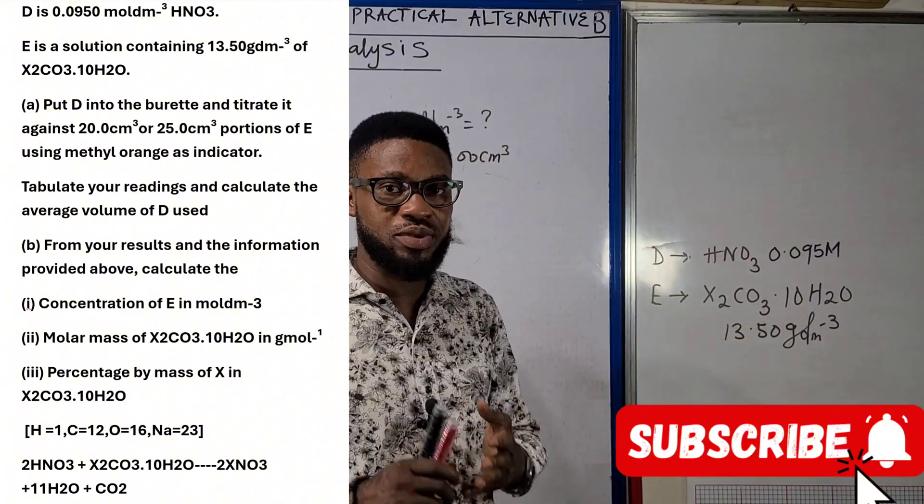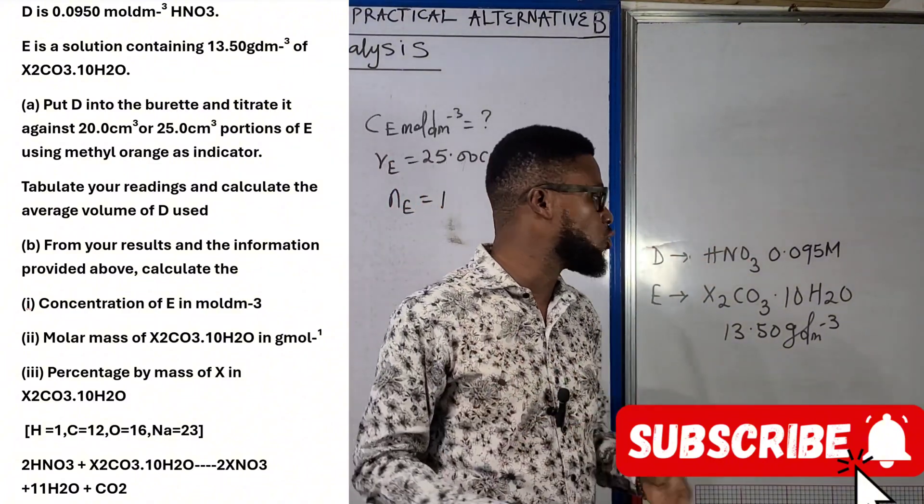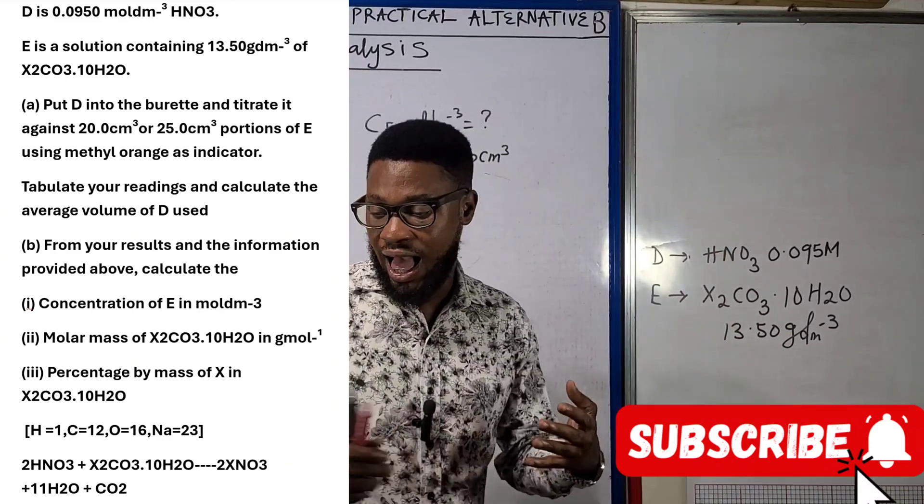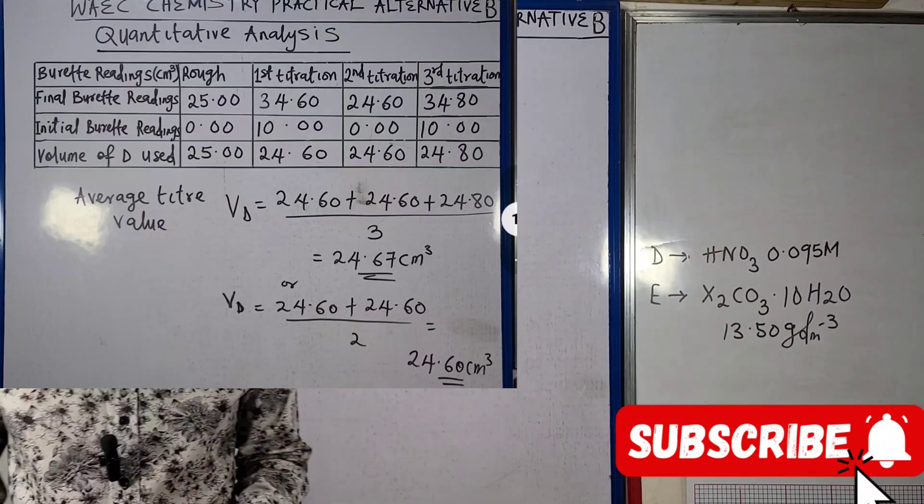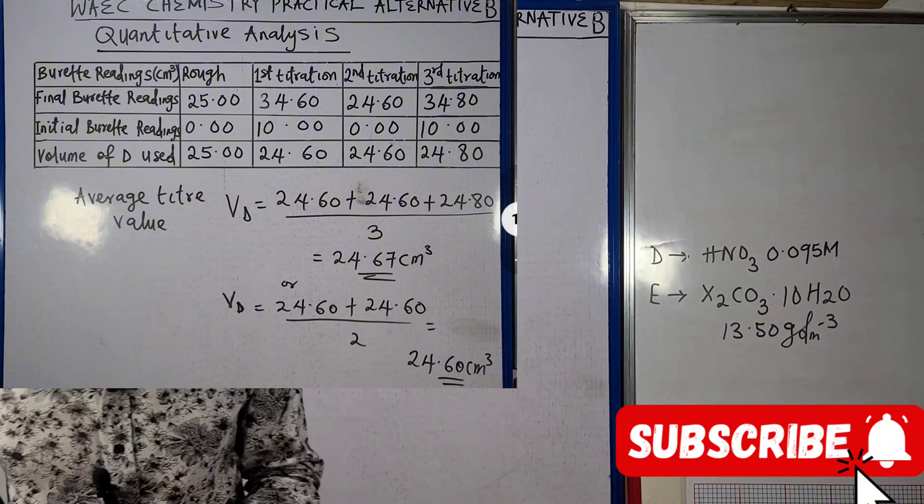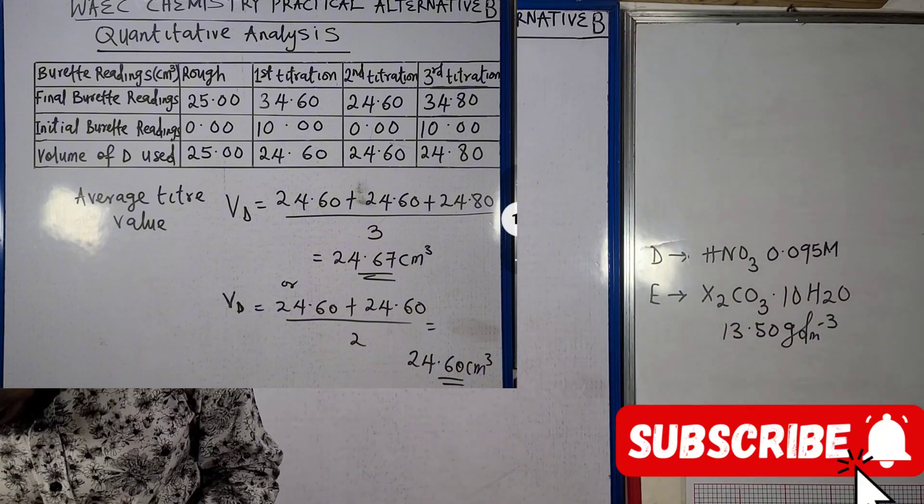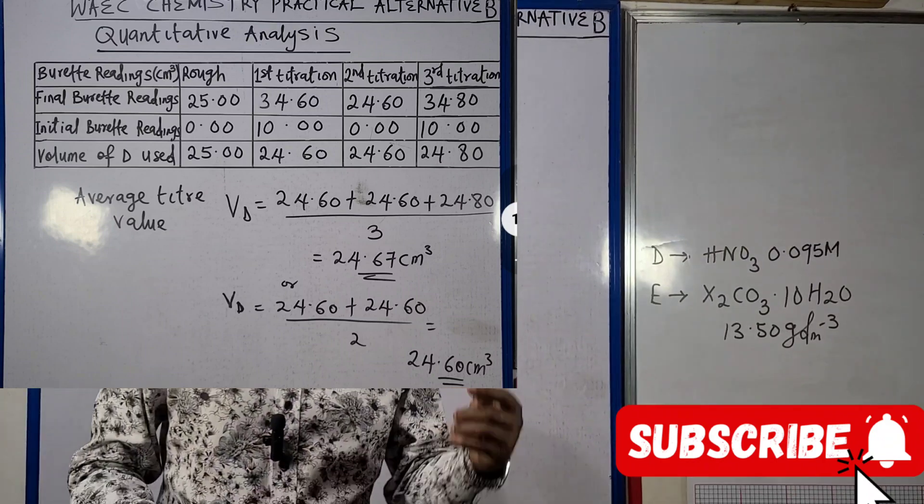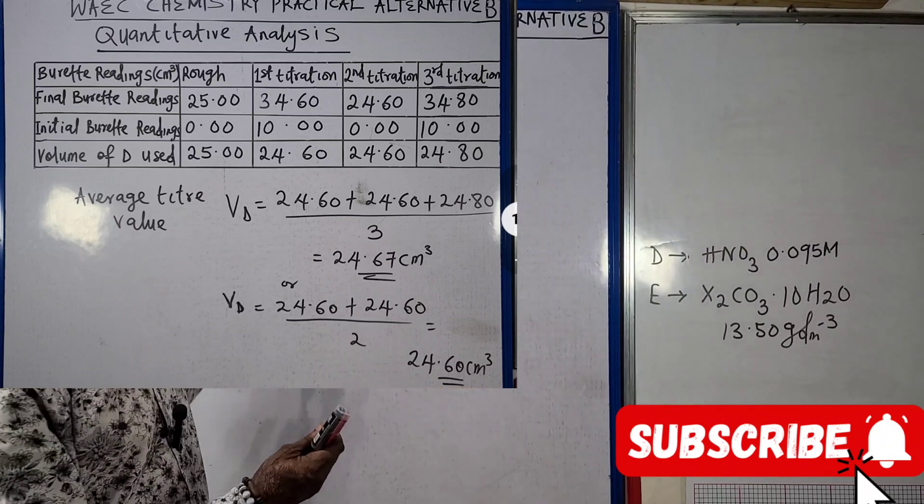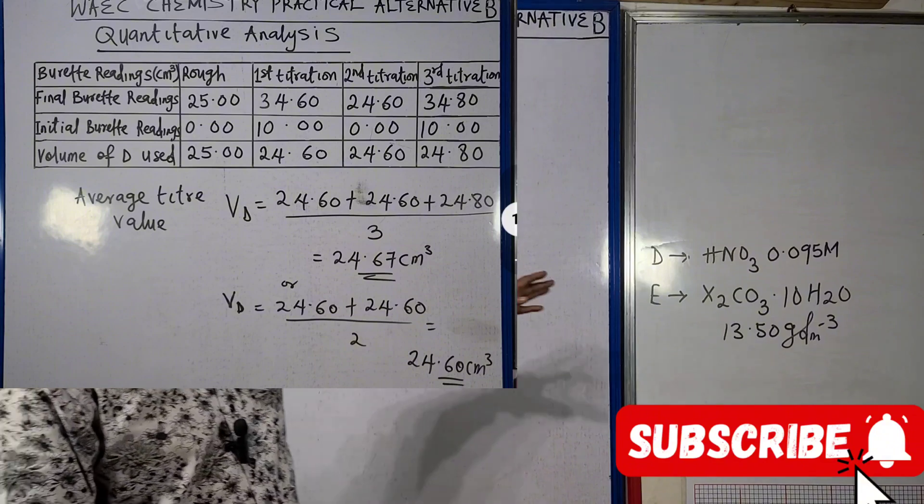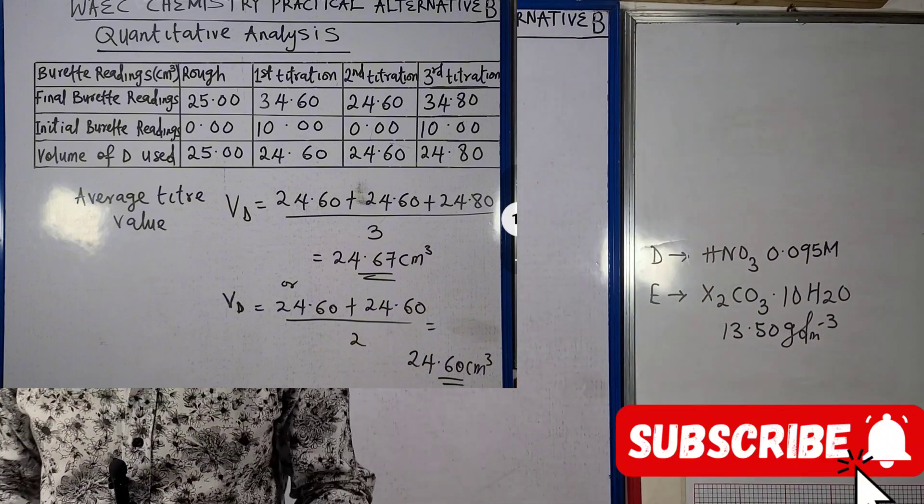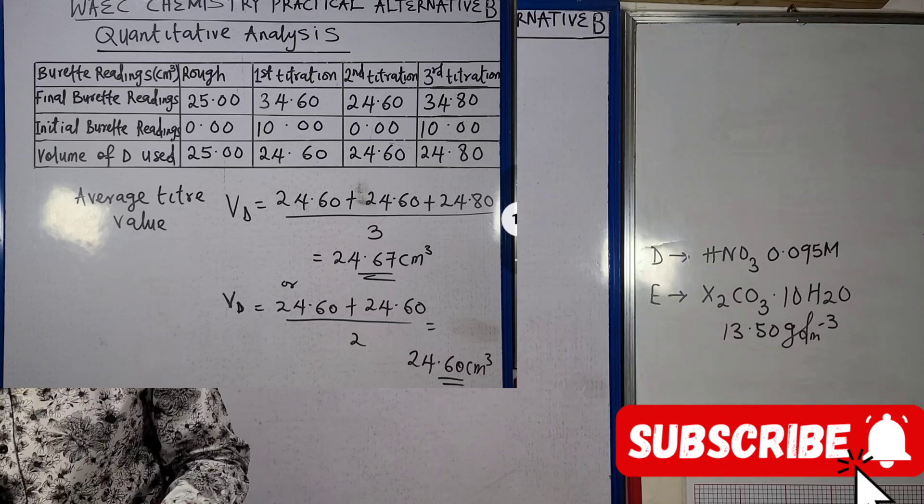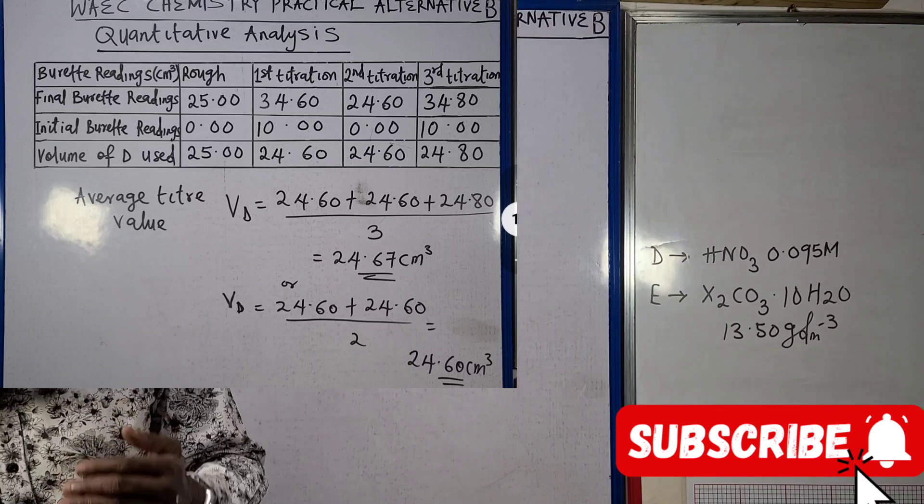When you use methyl orange here, methyl orange in Na₂CO₃ is yellow, but at the end point, when you begin to run in your HNO₃, there is going to be a color change from yellow to a light pink at which point you stop. We've actually done all of that and we've tabulated our readings.